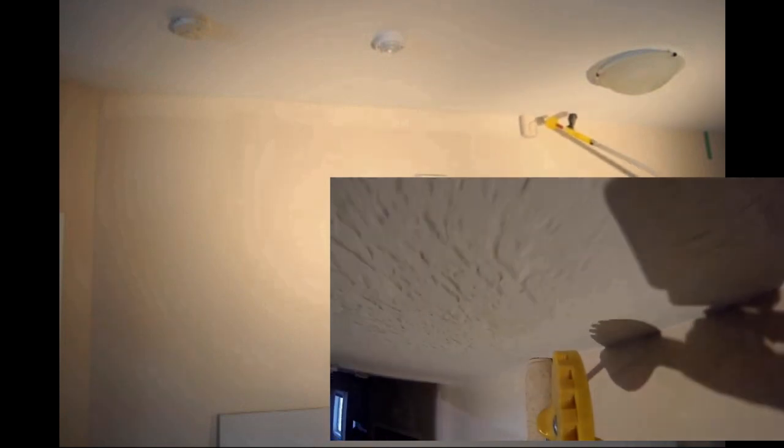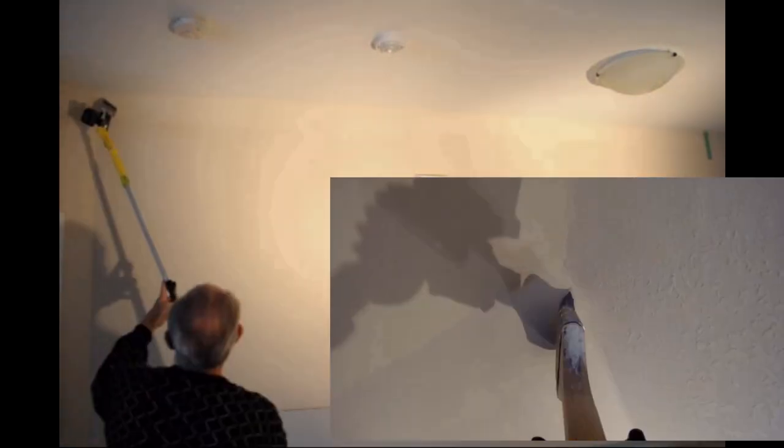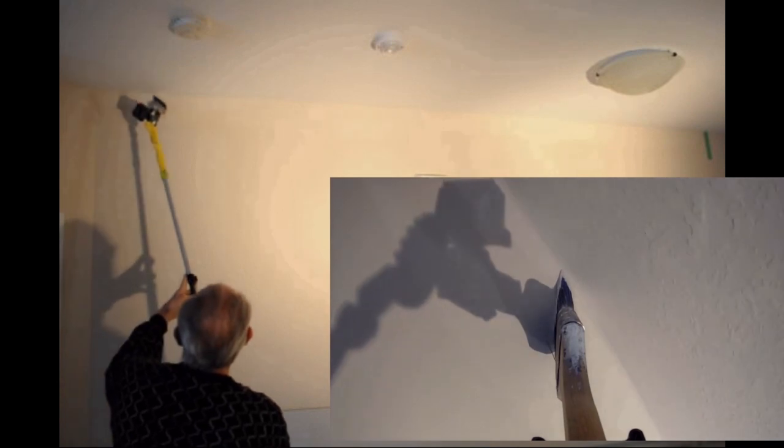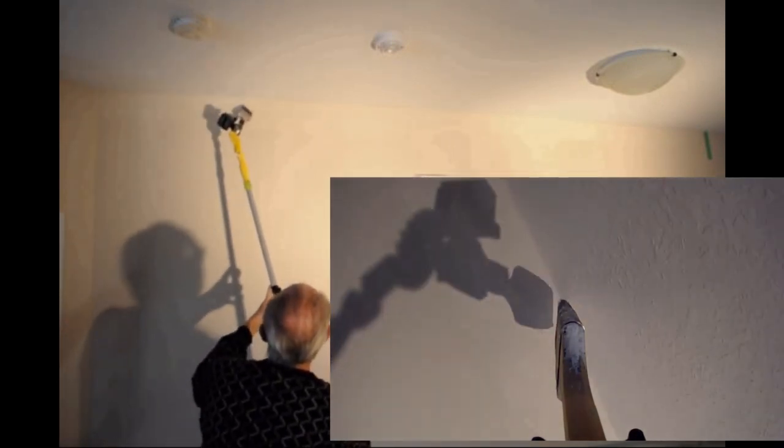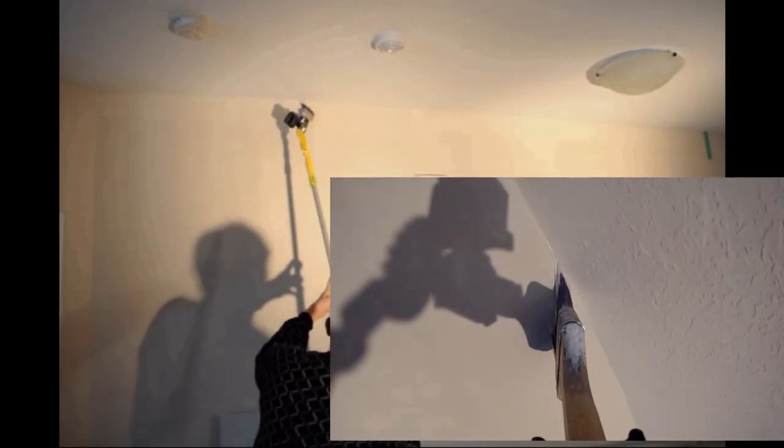You can eliminate ladder work by using our adjustable jumbo edger on an extension pole to quickly get paint up to the ceiling. Then you can use a brush extender to finish the ceiling cut line safely from the floor.